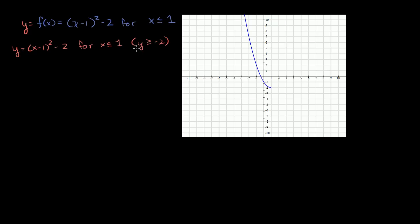So we could put in parentheses y ≥ -2, because right now this is our range, but when we swap x and y, this is going to be our domain. So let's keep that noted. To find the inverse, solve for x and make sure you keep track of the domains and ranges.